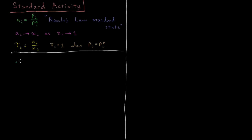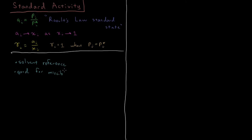This is then called a solvent reference because the standard state is when component i is present in overwhelming concentration — almost pure, almost entirely component i. So component i, in that case, is called a solvent when it is present at very large mole fraction such that it is dominating the solution. And this is good for solutions which are miscible over a large range of mole fractions.